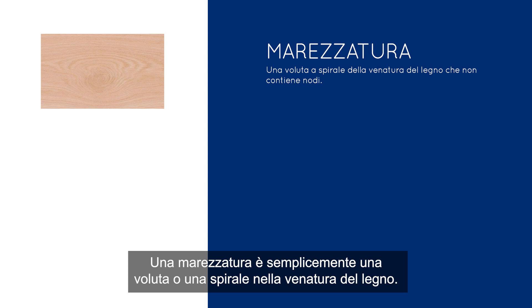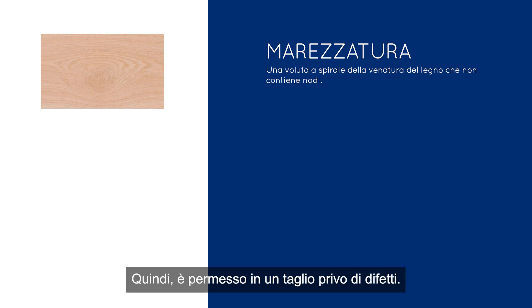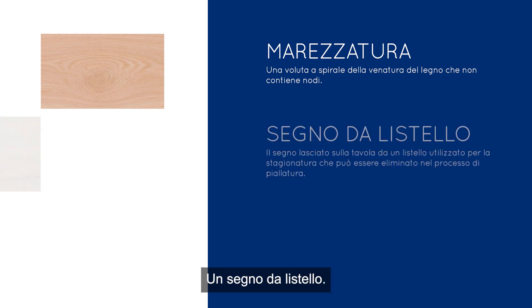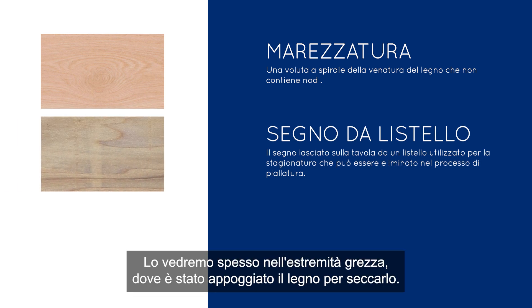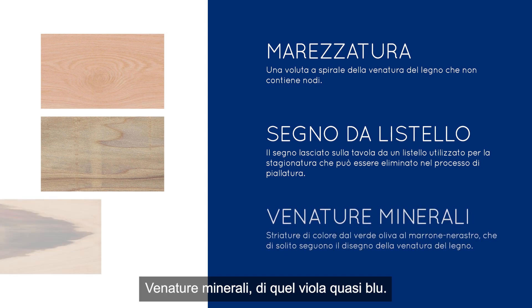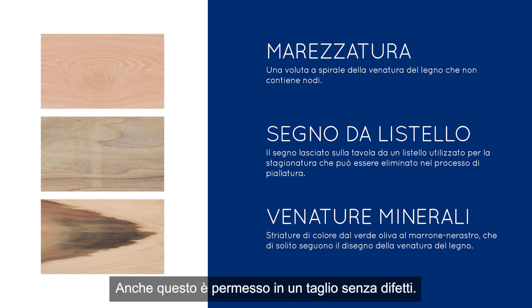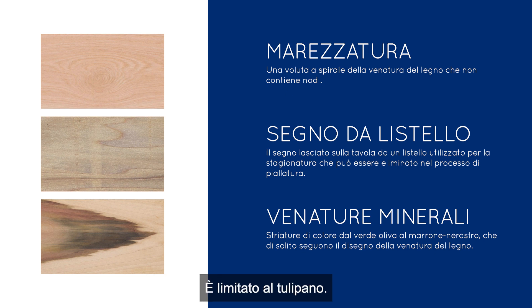A burl is simply a swirl or twist in the grain of wood — it could be near a knot but doesn't contain the pith center, so it's allowed in a clear face cutting. A sticker mark — you'll see that a lot in the rough end. Where the sticker was when it dried, it might be lighter in color; that's allowed in a clear cutting. Mineral streaks — that bluish purple you see in tulip wood on occasion — are also allowed, though limited in tulip wood.